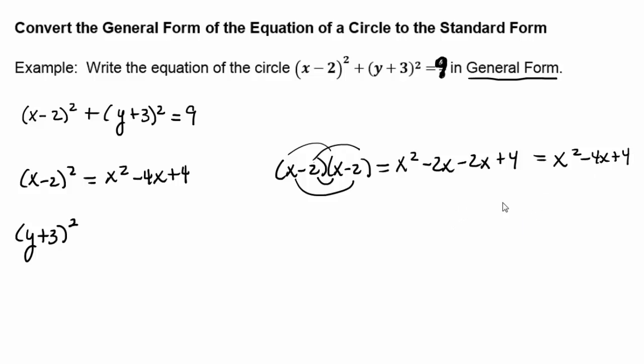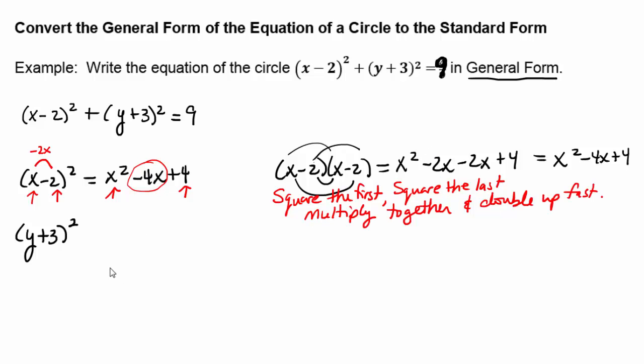There's also a faster way which I would like you to try to get used to because we need to recognize that there's a pattern here. Notice that we got the first term squared, the x got squared, we got the last term squared, the -2 squared is +4, and if you multiply these two terms together you get -2x. If you double that product you get -4x, twice their product in the middle. So there's a little rhyme that says: square the first, square the last, multiply together and double up fast.